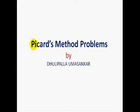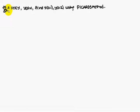Today we are going to discuss Picard's method problems. Given dy/dx is equal to 1 plus xy, y(0) is equal to 1. Find y(0.1) and y(0.2) using Picard's method.